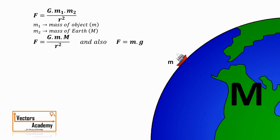We also know that force equals mass into acceleration. If the force is the gravitational force, the acceleration will be acceleration due to gravity, so F equals m into g. Now if we equate both these forces, the mass gets cancelled out, and we are left with small g equal to GM upon r squared.